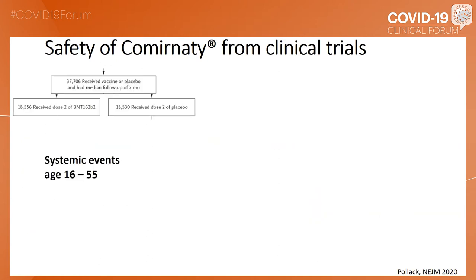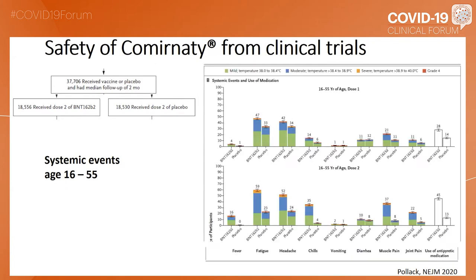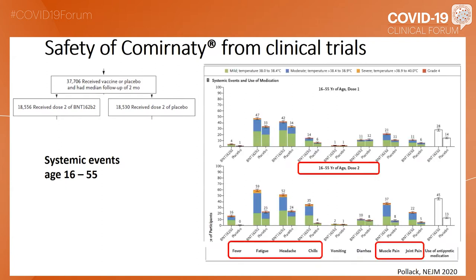If we focus on the systemic events for ages 15 to 55, you see that fever, fatigue, headache, and chills, as well as muscle pain and joint pain, were the main side effects noted. And here again, those were more noted with the second dose.